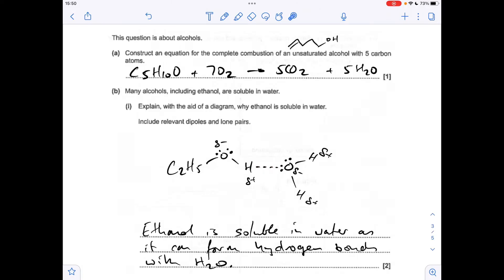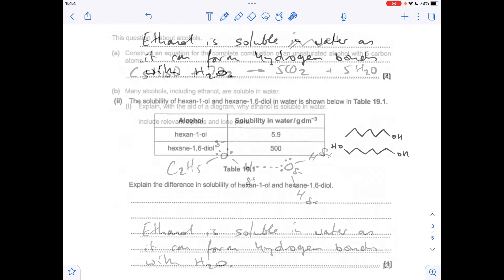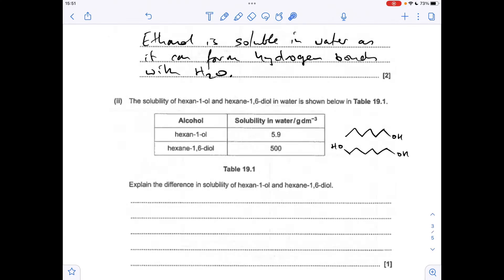Next part: comparing the solubility of hexan-1-ol and hexane-1,6-diol. I've drawn both the molecules up there and you can clearly see you've got two hydroxyl groups in the diol whereas only one in hexan-1-ol. So basically this can form more hydrogen bonds than this, so it's more soluble.